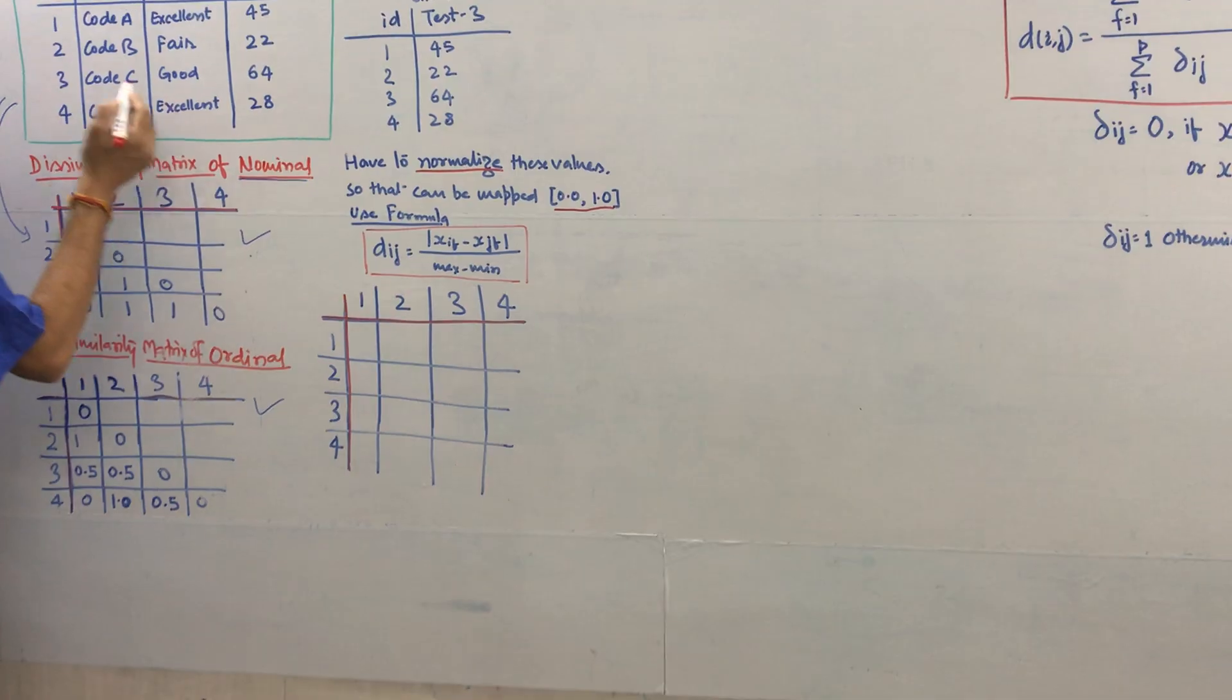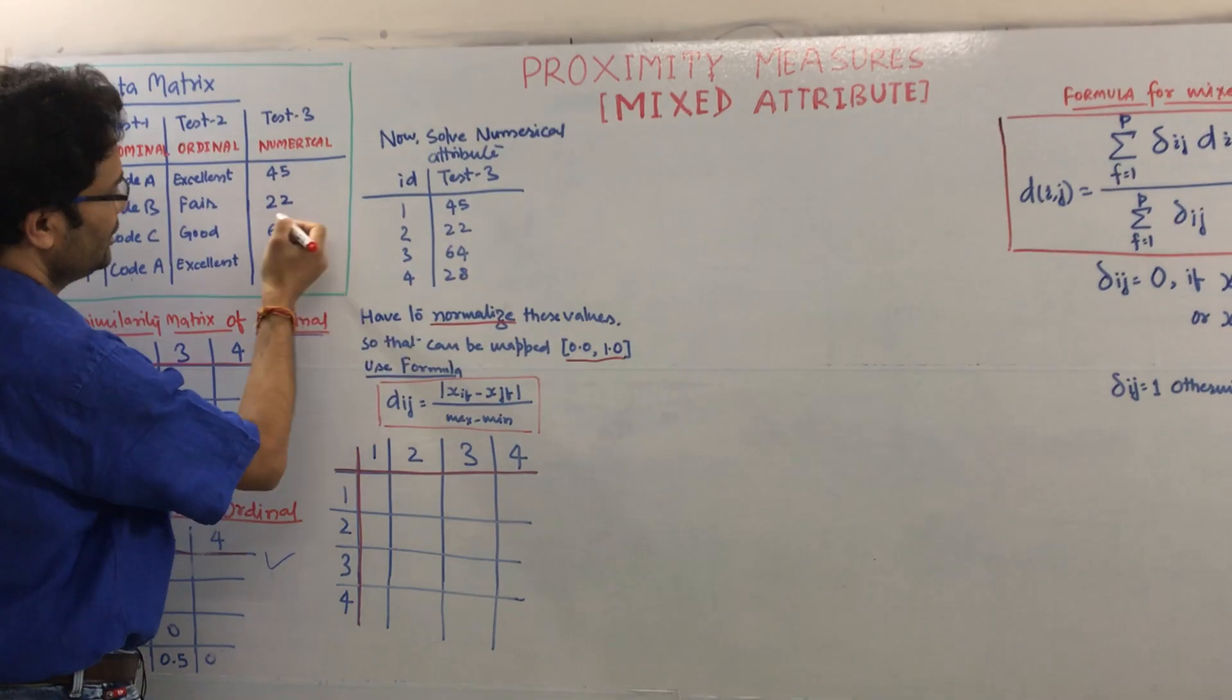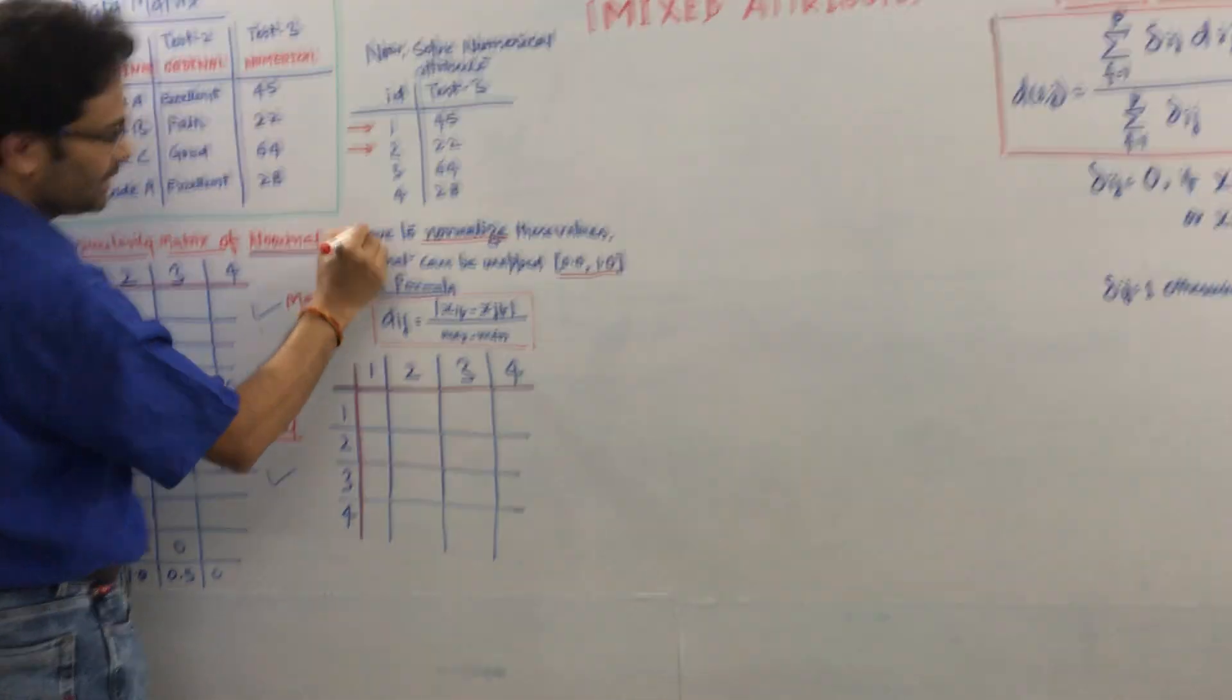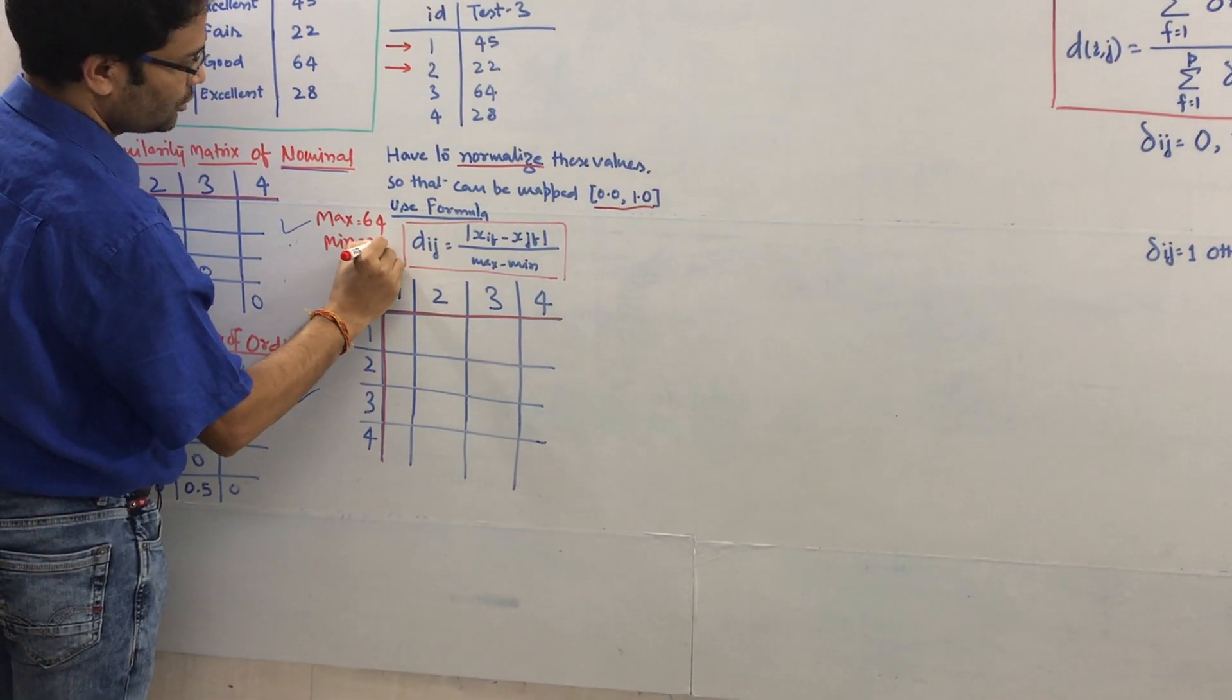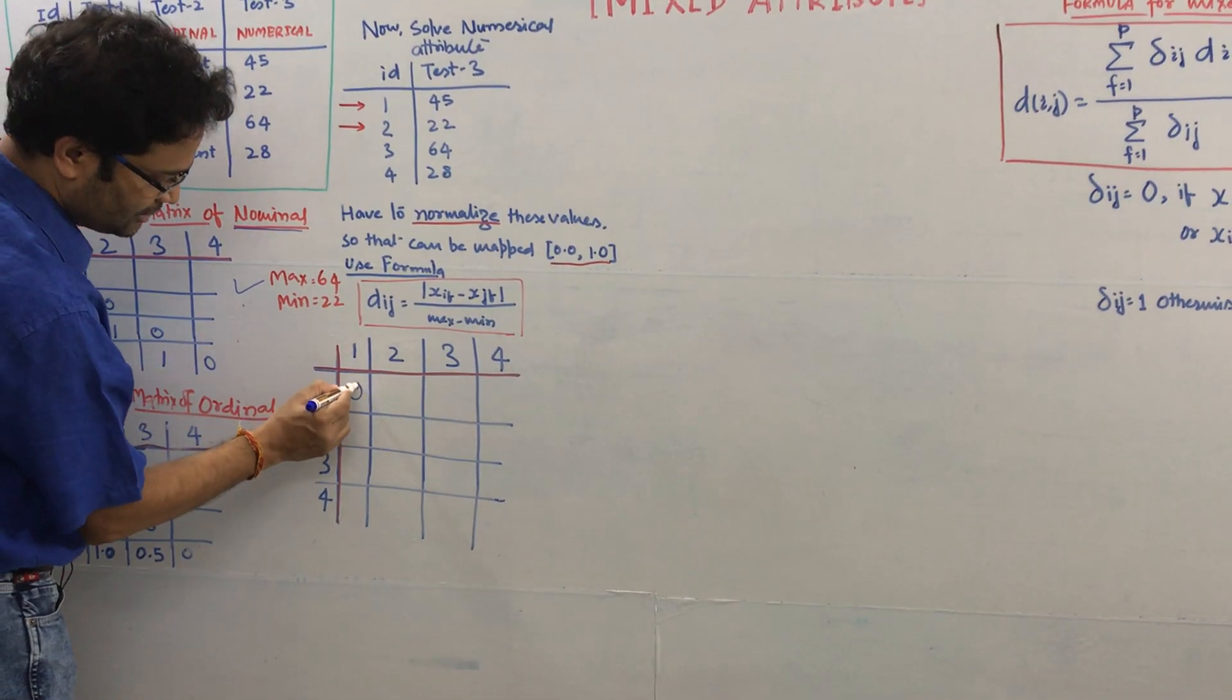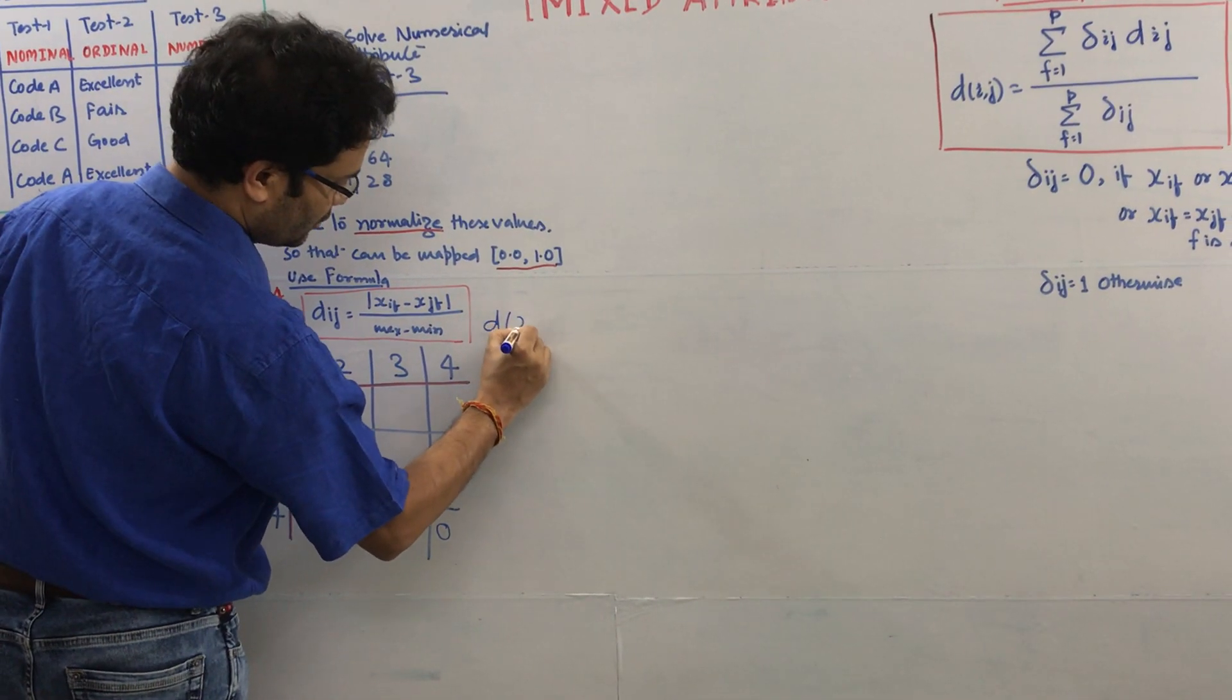d_IF or d_JF means if you want to calculate this part, forget about these two, just consider this. I have already given here ID 1234, test data 45, 22, 64, 28. What you have to do is find out what is the max, which is 64, and what is the min, which is 22. Now apply this formula. This formula says if you find out, and again as per the dissimilarity matrix, it will be 0 right. There is no any distance between the same number 1-1, 2-2, 3-3.